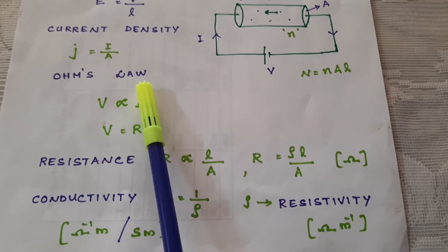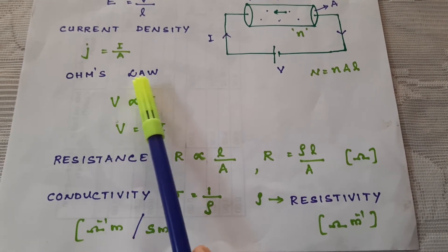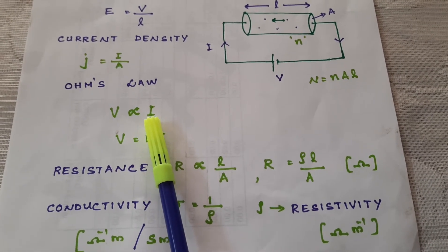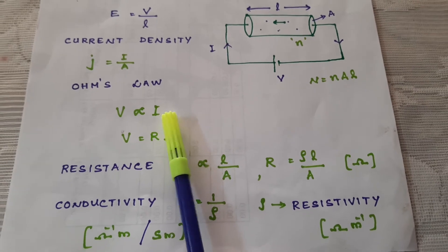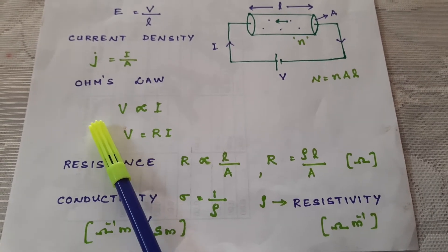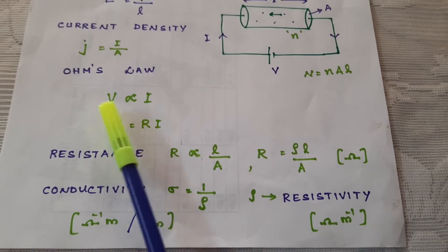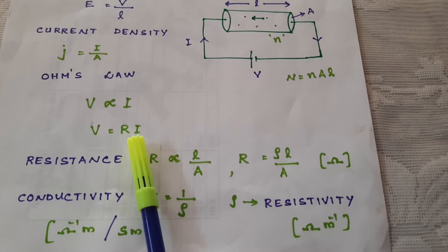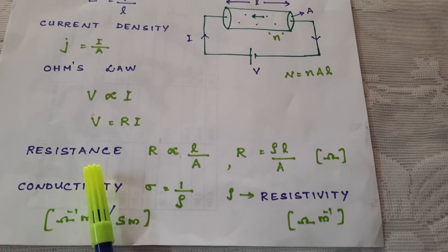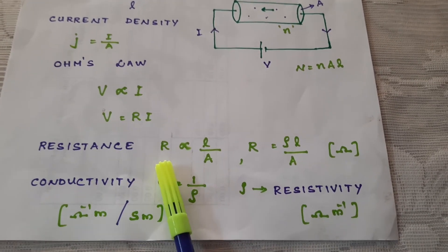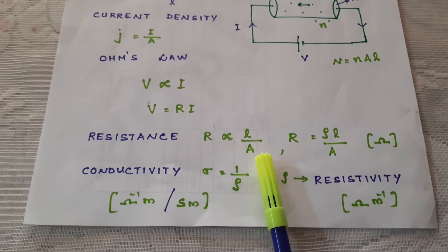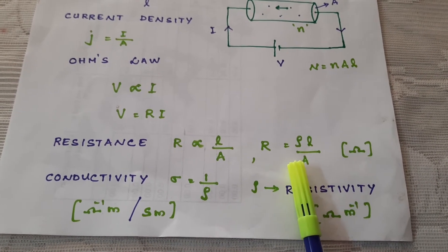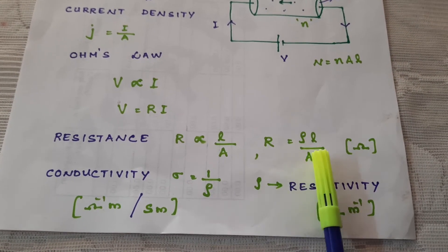Metallic conductors obey Ohm's law. According to Ohm's law, the potential difference is directly proportional to the current — the current flowing through a conductor is directly proportional to the potential difference applied. So V is proportional to I, or V is equal to a constant R into I. This constant R is known as resistance. The resistance of a conductor is directly proportional to length and inversely proportional to area, so R is equal to a constant ρ into L by A.